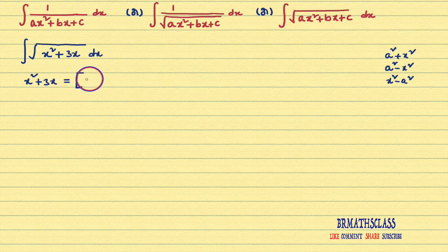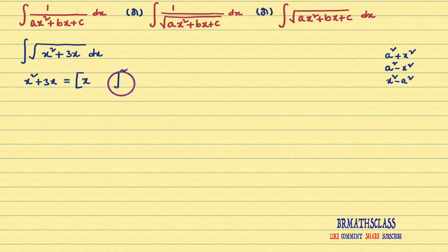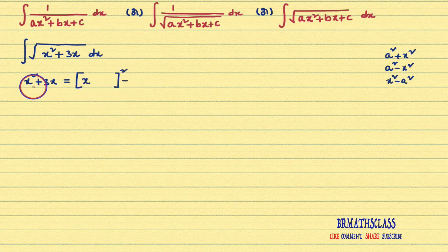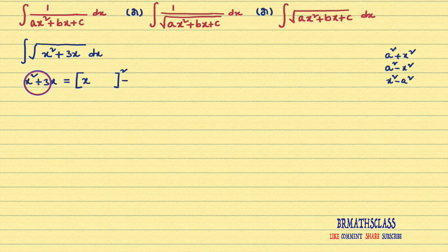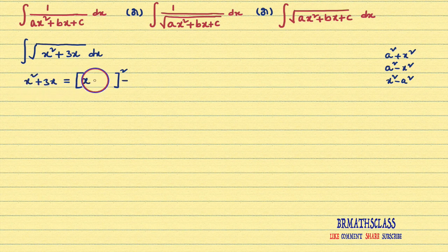You just start writing like this: start brackets, x is fixed in all the problems, close the brackets, square is fixed in all the problems, and you write minus here — these things are fixed in all the problems of this type. Now, after x², what sign is there? That sign we will write here. After x², if minus sign is there, we will write minus here. In this problem, after x², plus sign is there, so I will write plus here.